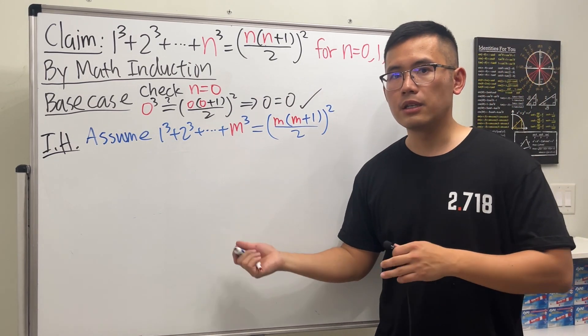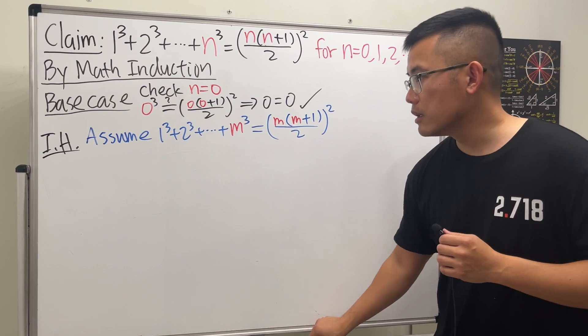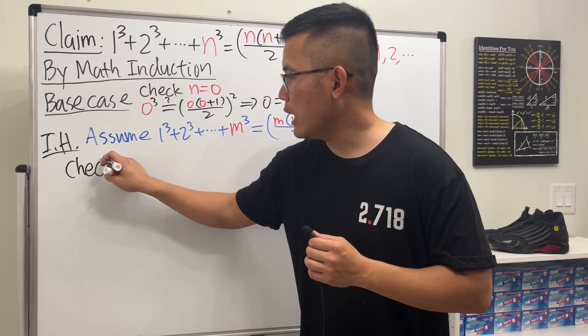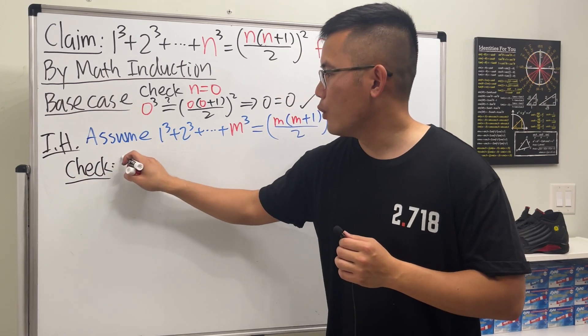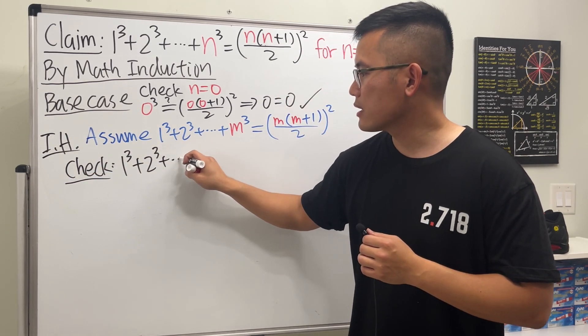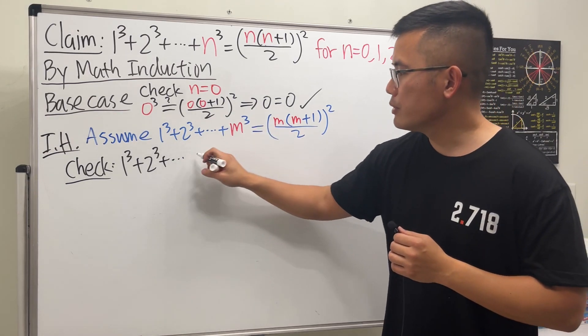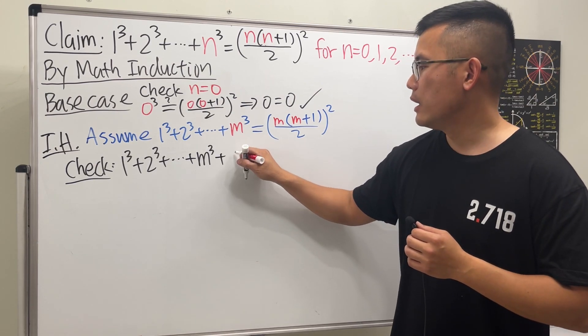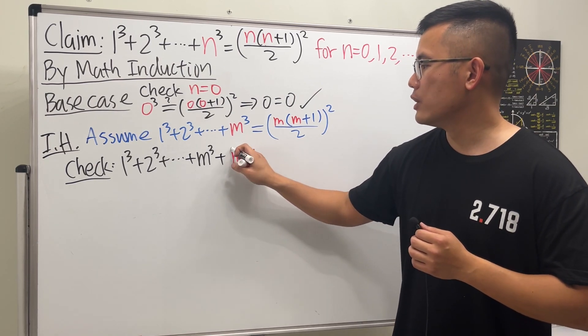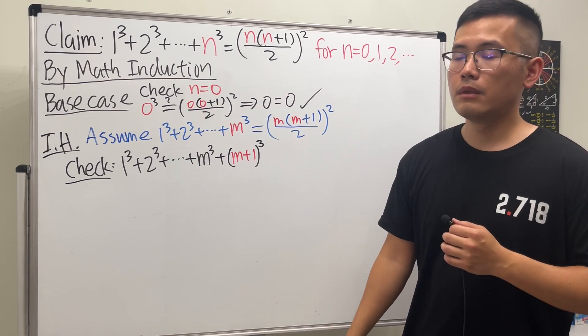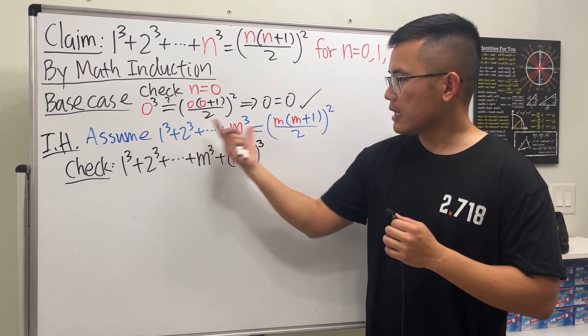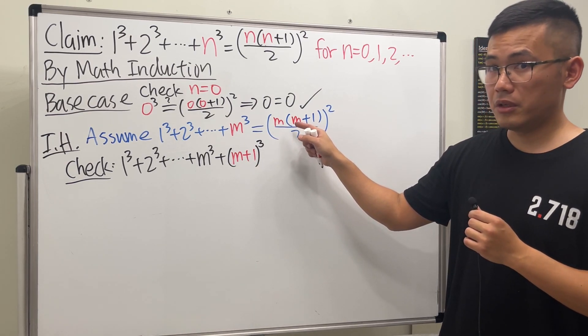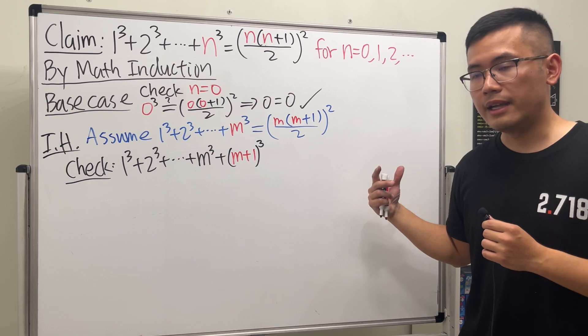And hopefully this right here can help us for the next part. The next part means that we'll take this assumption and we will check what happens when we have 1³ + 2³ + ... + m³ here, but we want to move forward one step, so we will add (m+1)³ like this. Meaning that based on this, is it okay for us to end up with m+1 here, m+1 here in the formula? If so, then we are done.